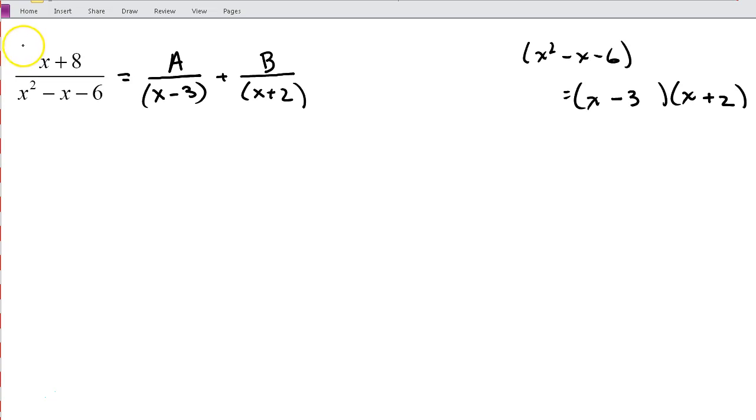So I'm going to multiply through by my denominator. So I'm going to multiply through by x minus 3 times x plus 2. Make sure we distribute this whole thing here, here, and here. So when I multiply my denominator here, the denominator of the original fraction by the original fraction, I'm simply left with x plus 8.